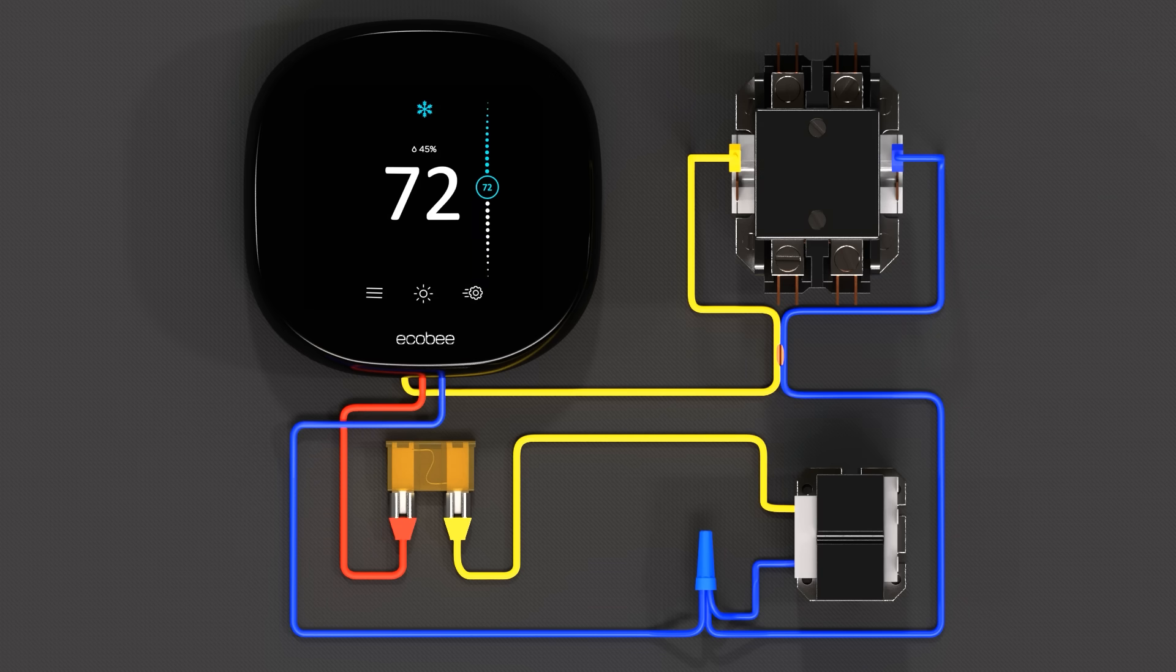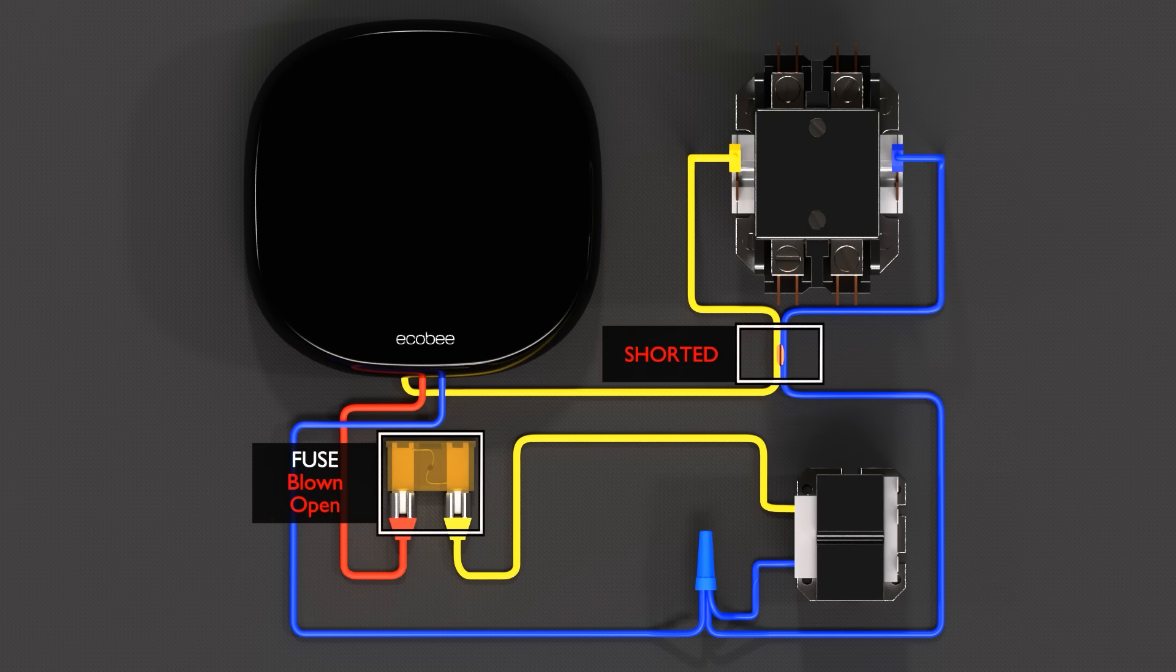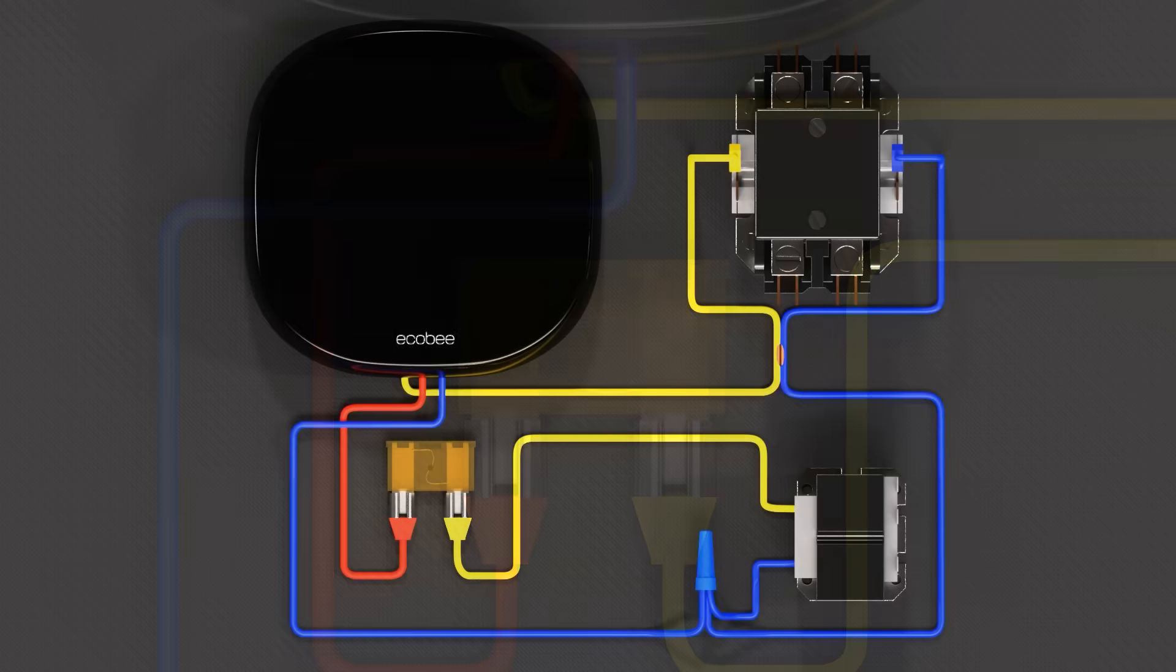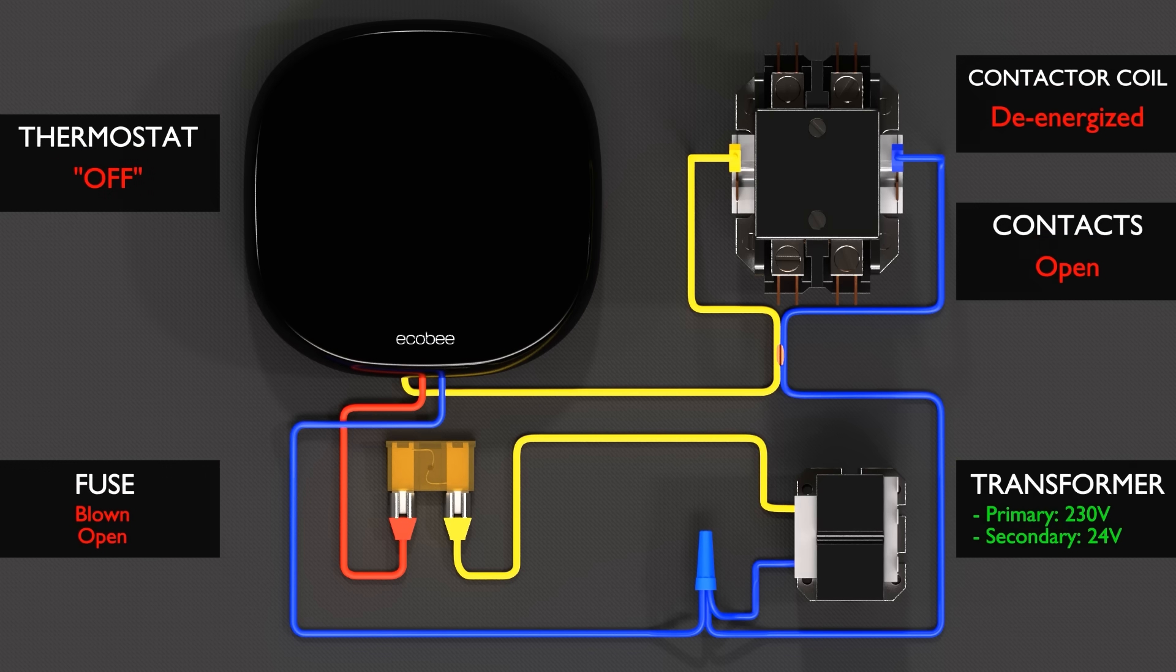A short circuit, or a dead short between hot and common, will result in a blown fuse. This is because the electricity is allowed to travel, bypassing the load, making this circuit shorter than it should be. This short causes a high current, which forces the 5-amp fuse to blow, protecting the circuit. Because the fuse is blown, or open, thermostat will now be off, the contacts will be open, and the contactor coil will be de-energized.